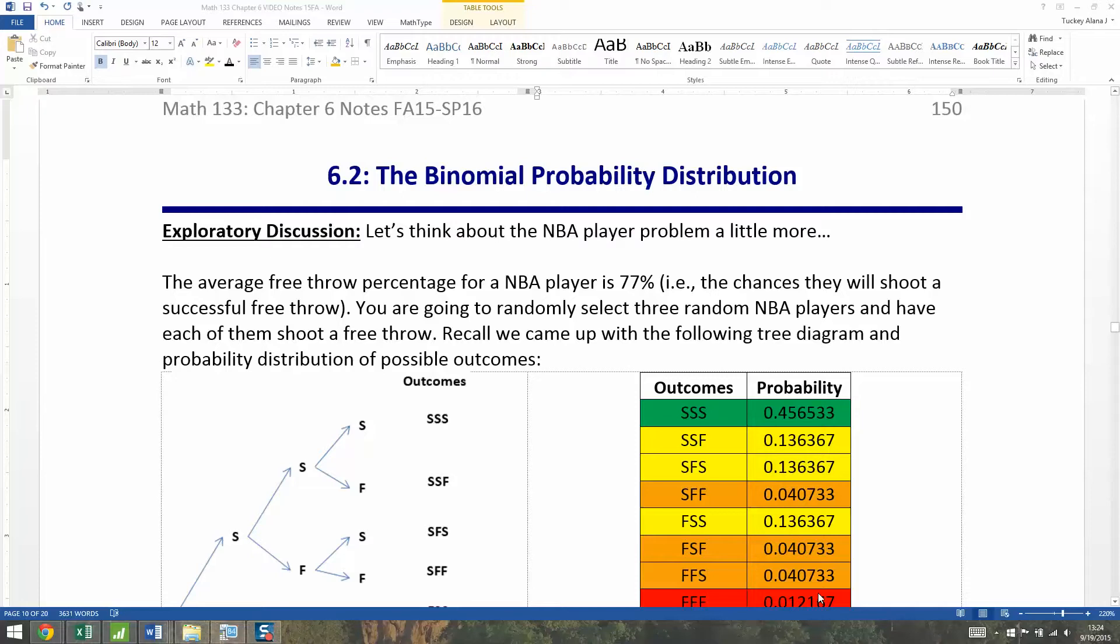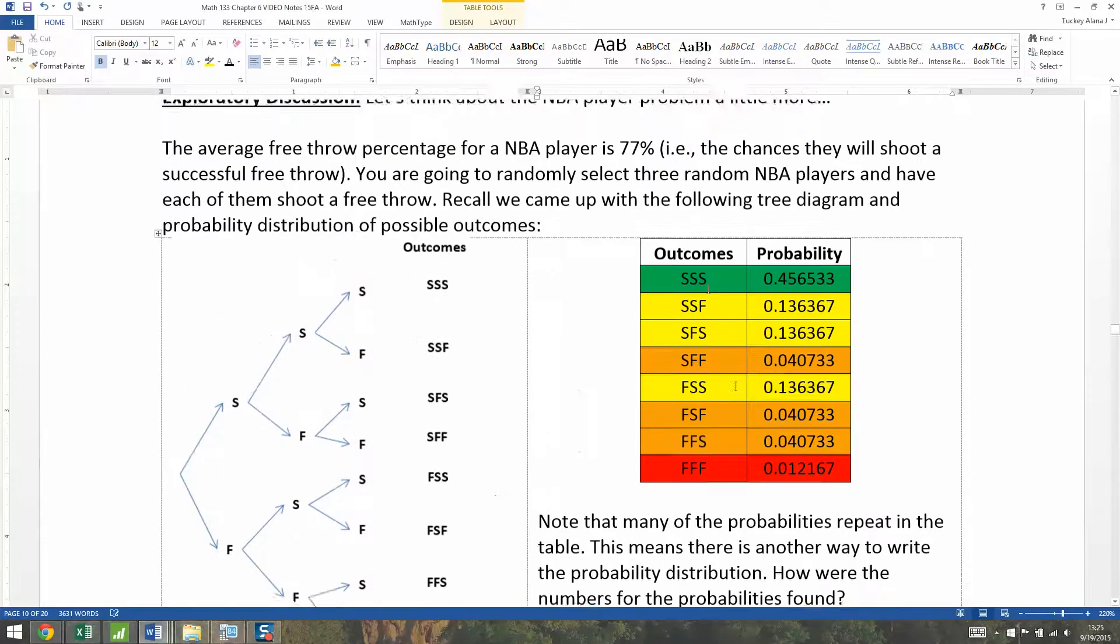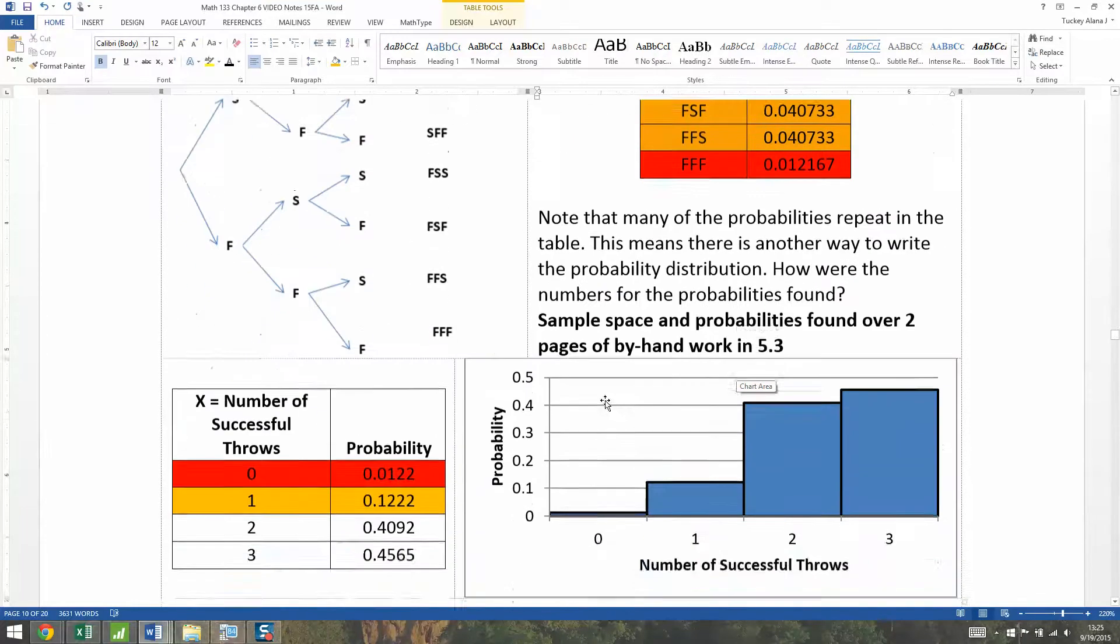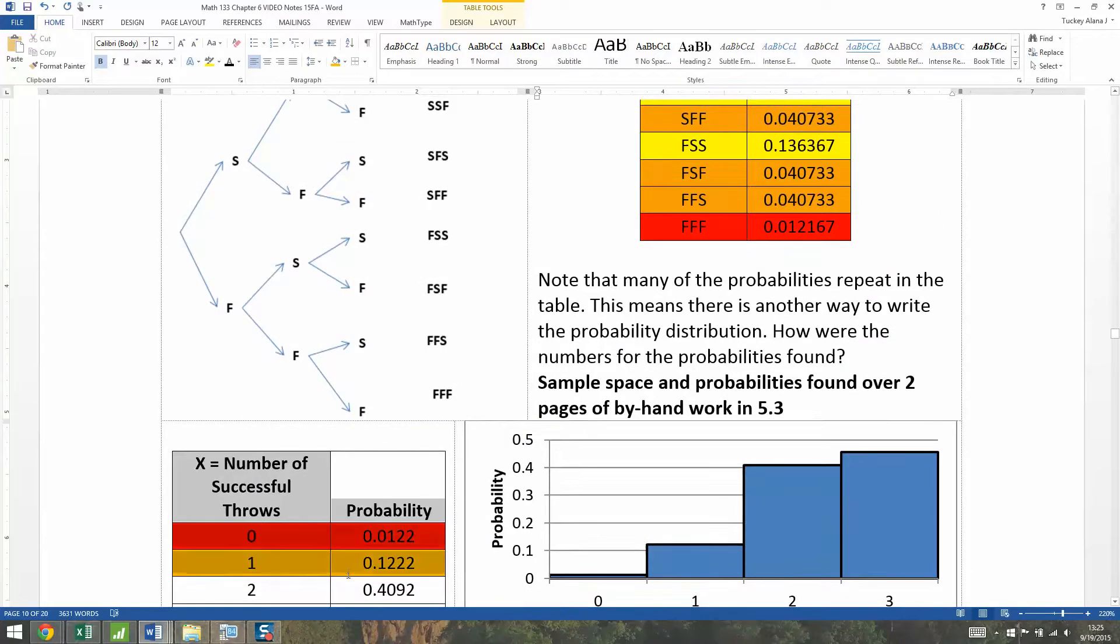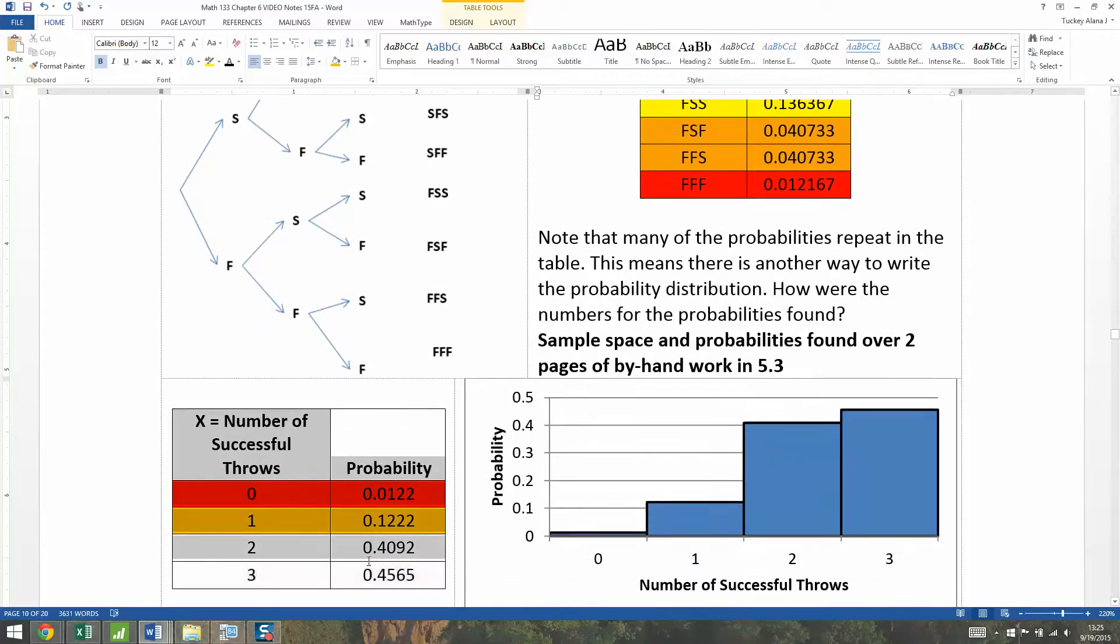In section 6.1, we learned that discrete random variables have probability distributions that can be written multiple ways. They can be written in table form and in histogram form, which I actually have going on here for this problem. There's a discrete random variable distribution in table right down here and histogram right over here.